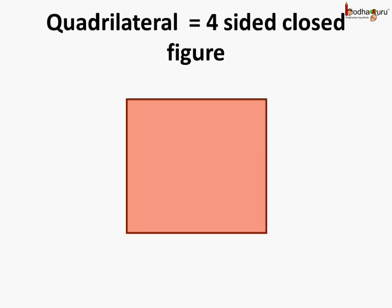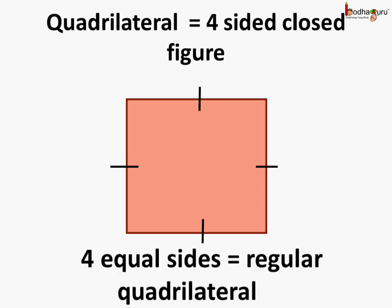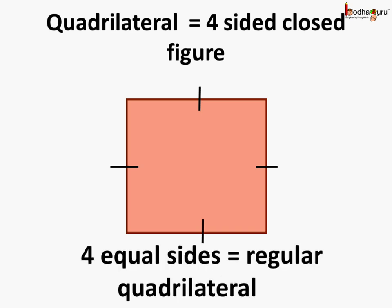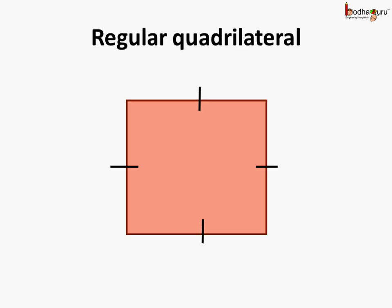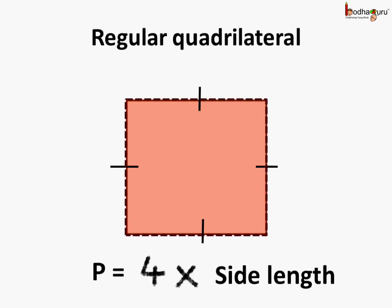Now if we come to a quadrilateral, we know it is a 4-sided closed figure. If all 4 sides are of equal length, then we can say it is a regular quadrilateral. The perimeter of a regular quadrilateral is equal to 4 times the side length, as it has 4 sides of equal length.